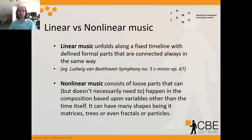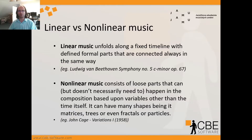Let's think about non-linear music, which basically consists of some sort of loose parts that can — but don't necessarily need to — happen in the composition based upon variables other than time itself. These variables can be, for example, the will of the performer, some external parameters, or something else. It can have many shapes: matrices, trees, fractals, particles — basically the music can stem in different directions than just a line from A to B. An example is John Cage's Variations No. 1 from 1958, where you can basically choose which parts you will play, in what order, and if at all.